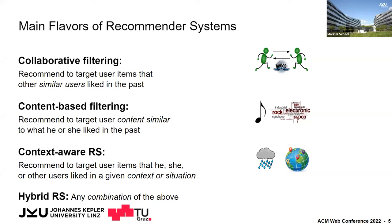Then we have content-based filtering, where the focus is on describing items through content characteristics — very often genre or some other tags or meta-information assigned to items like movies or music. The goal is to recommend to the target user items most similar to the content they already rated or consumed — for instance, movies or songs from the same genre.